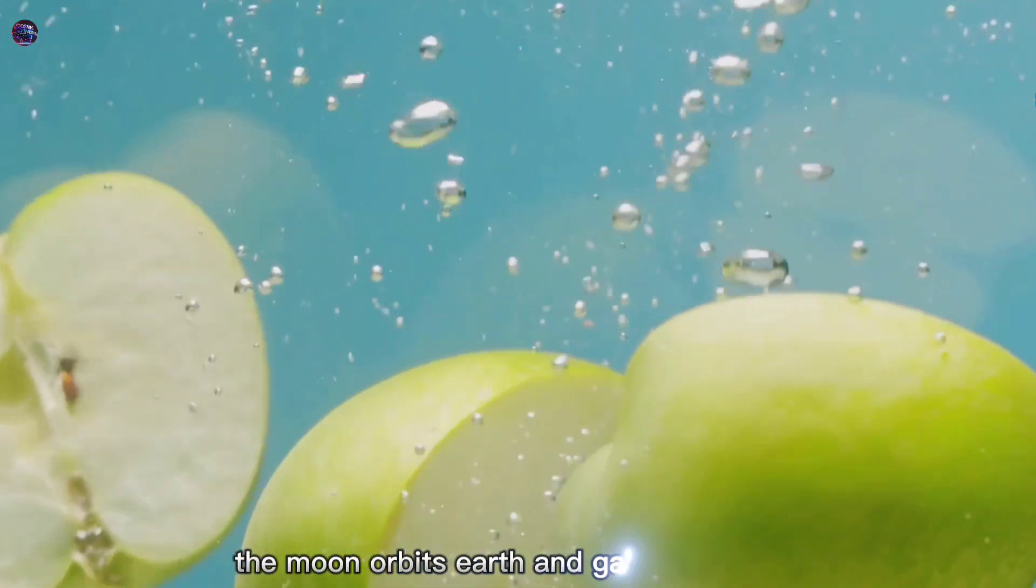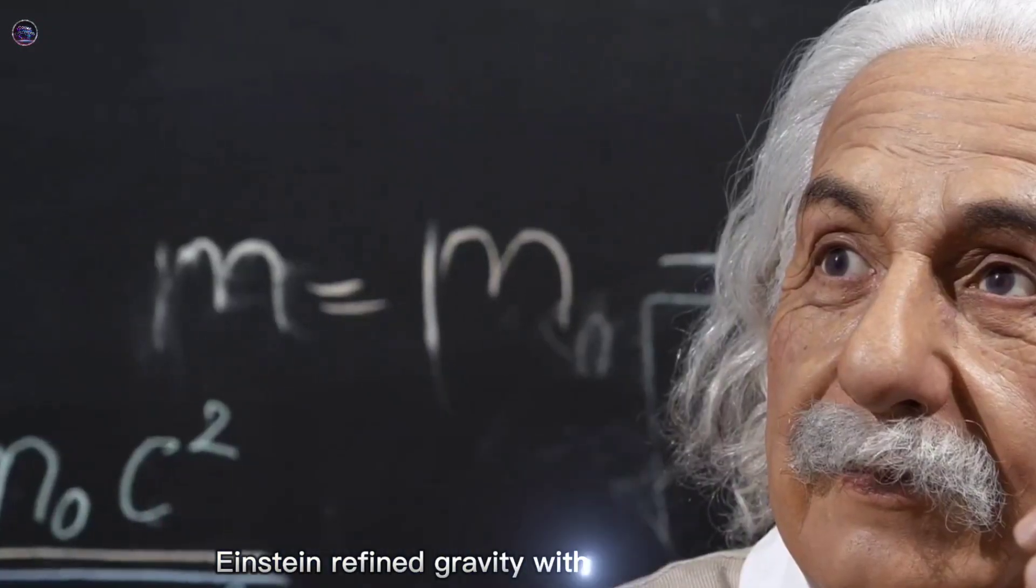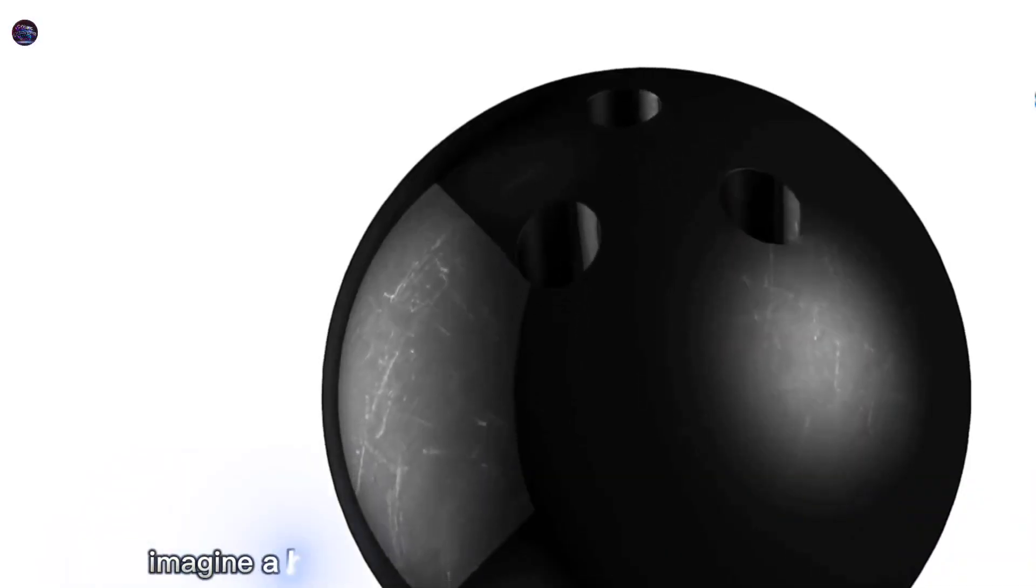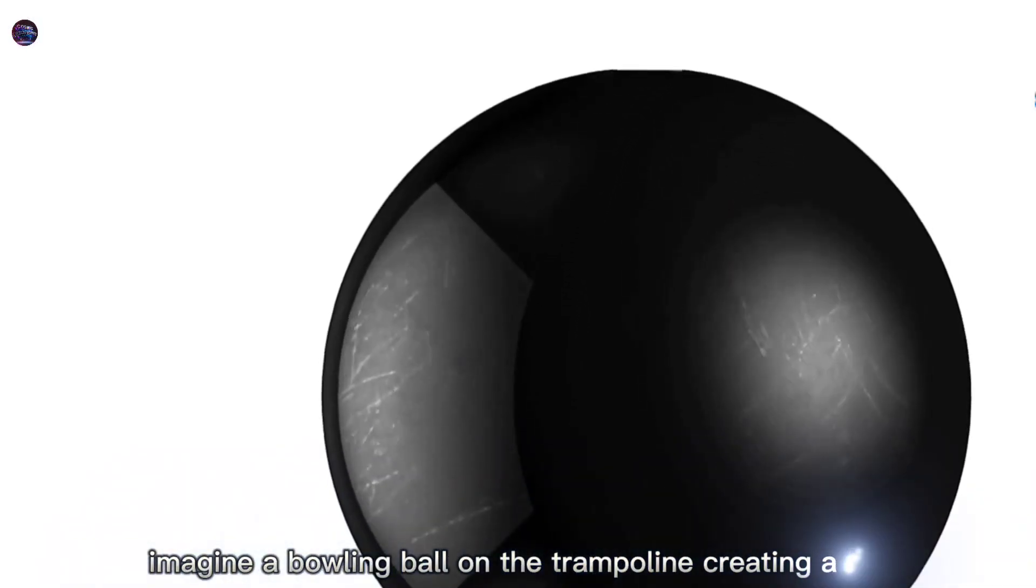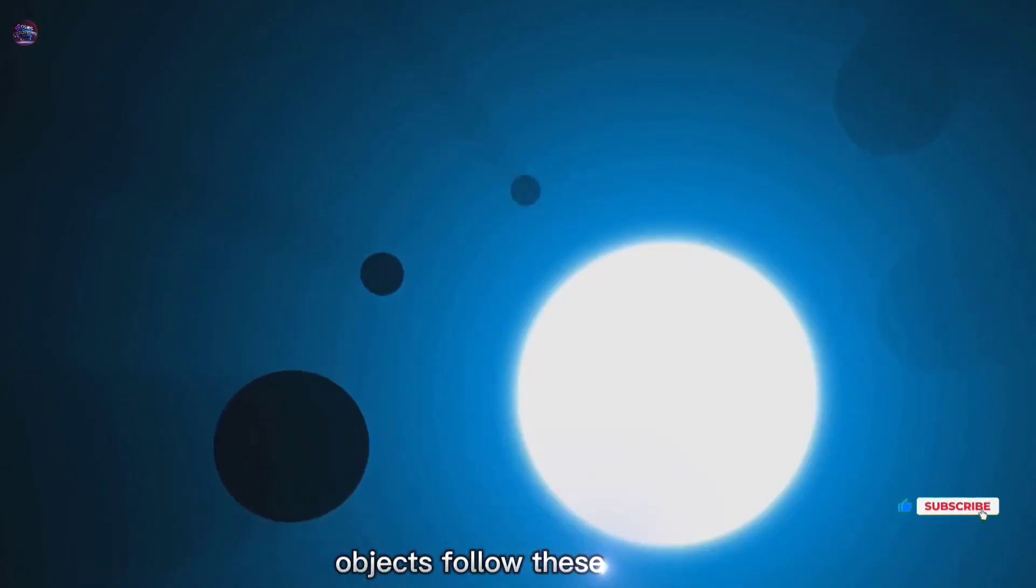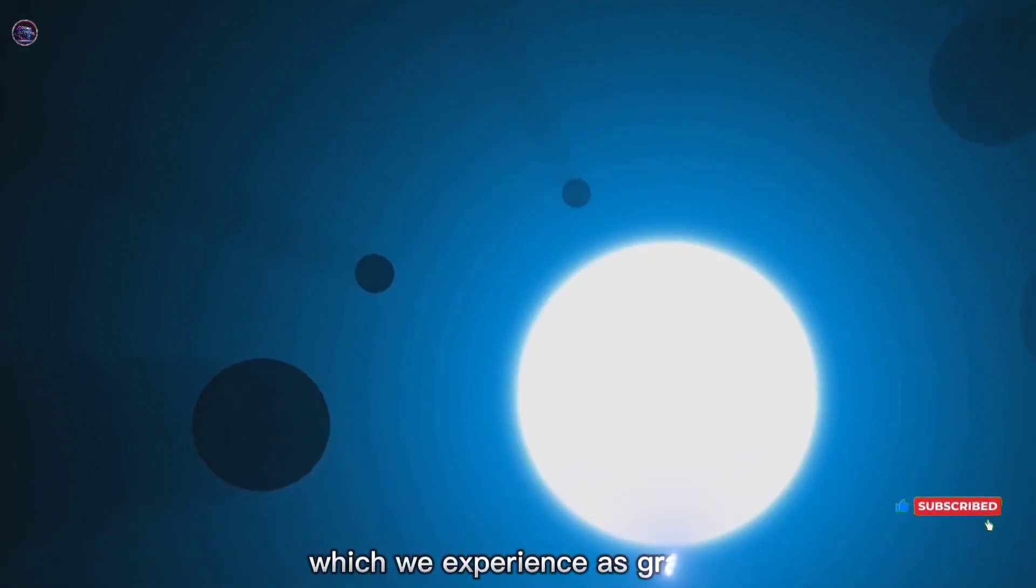the moon orbits Earth and galaxies cluster. Einstein refined gravity with general relativity. He proposed gravity as a curvature in space-time. Imagine a bowling ball on a trampoline creating a dip. Massive objects warp space-time similarly. Objects follow these curves which we experience as gravity.